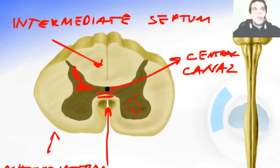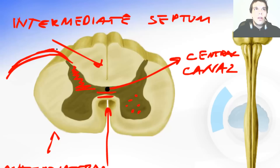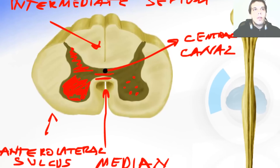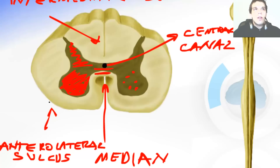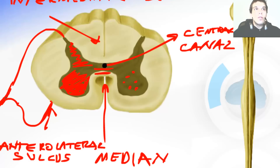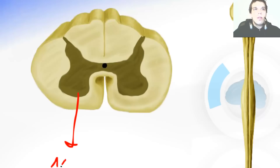The posterior horn of the gray matter is the sensory horn, because the posterior sensory roots of the spinal nerve enter the spinal cord through this horn. The anterior horn of the gray matter is the motor horn. The motor neurons send their axons through the anterolateral sulcus, where they join with the sensory root of the spinal nerve to create the spinal nerve.